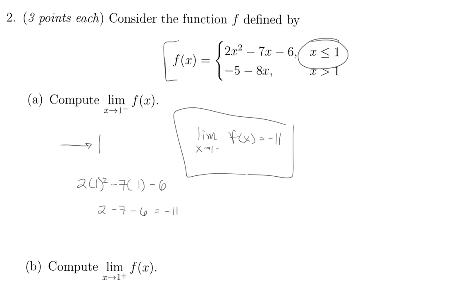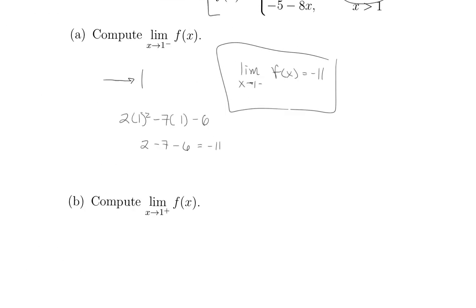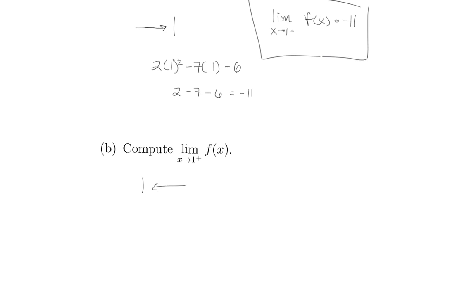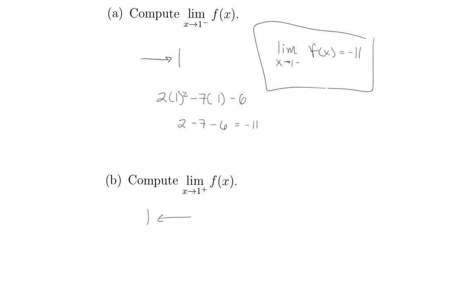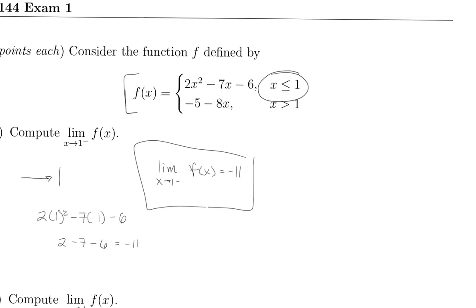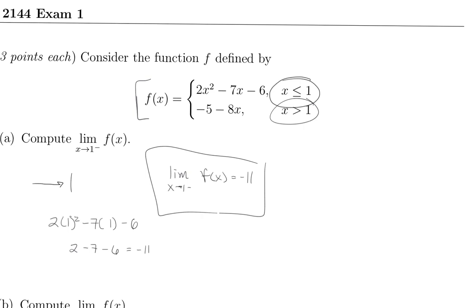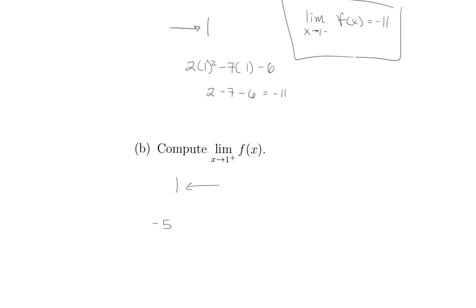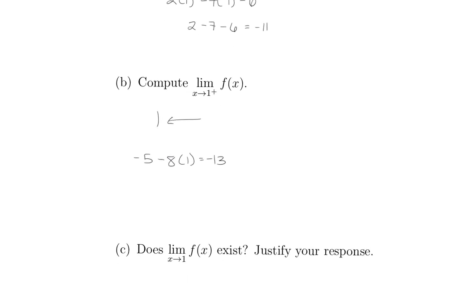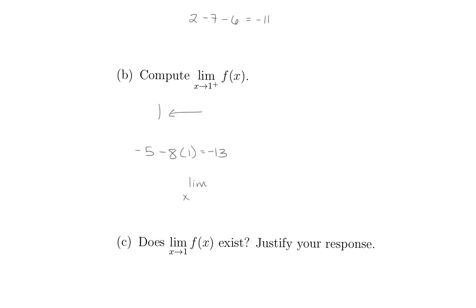Now, computing the limit from the right means we're going from a higher number down to 1. So we're going to use the second part of the piecewise function, since that represents all numbers to the right of 1. So we'll have negative 5 minus 8 times 1, which gives us a value of negative 13. That means the limit as x approaches 1 from the right is equal to negative 13.